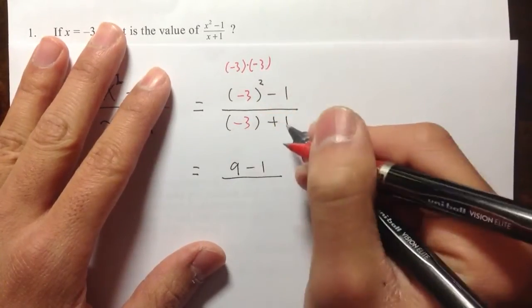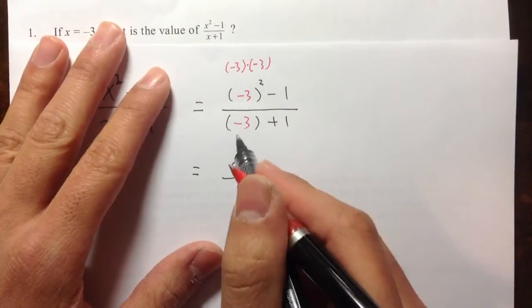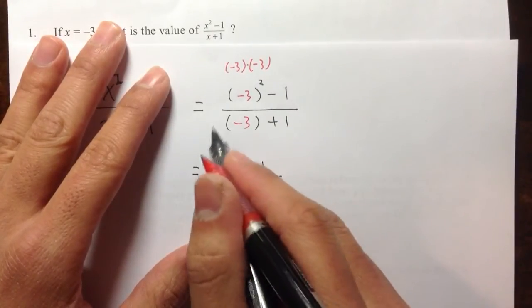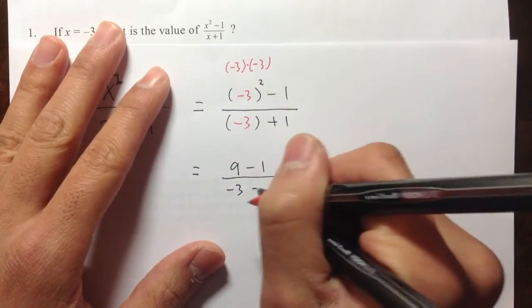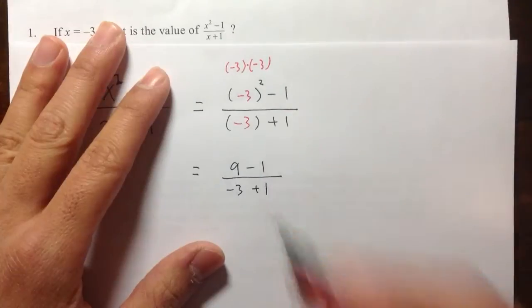Over negative 3 plus 1. And as you can see that negative 3 inside of the parenthesis, there's nothing in front, we don't have an exponent. So this is just negative 3 plus 1. We can just take out the parenthesis.